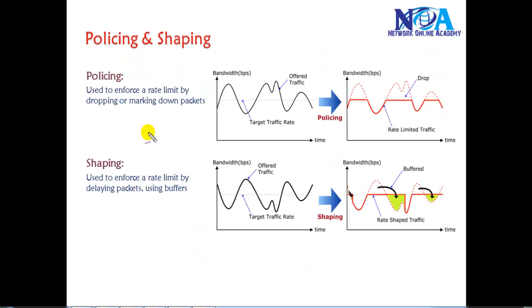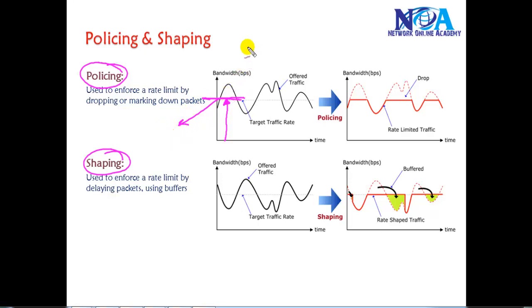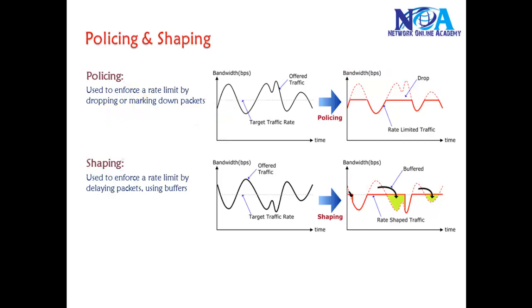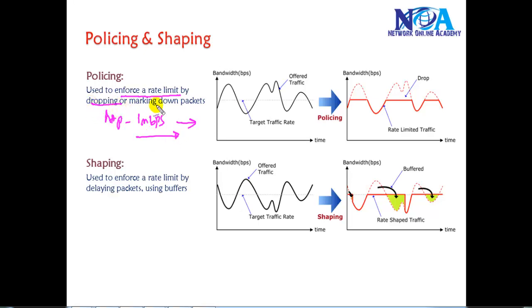Apart from those, we also have policing and shaping. Policing and shaping are almost similar. In policing, we define the maximum amount of bandwidth or maximum number of packets that can be sent by a specific traffic type. For example, we can define a rule that HTTP is allowed to utilize no more than 1 Mbps, and anything exceeding that will be automatically dropped. So we enforce a limit — if HTTP exceeds 1 Mbps, the exceeding traffic can either be dropped or re-marked as low priority.